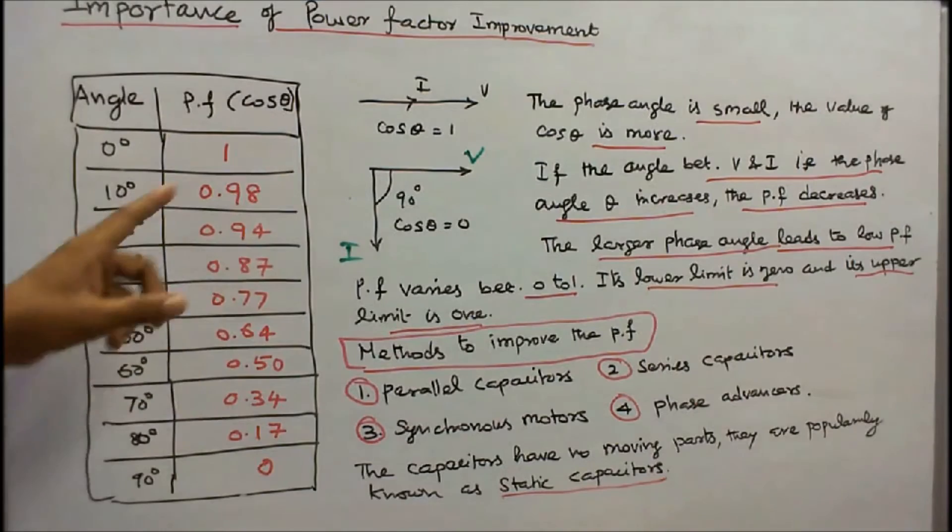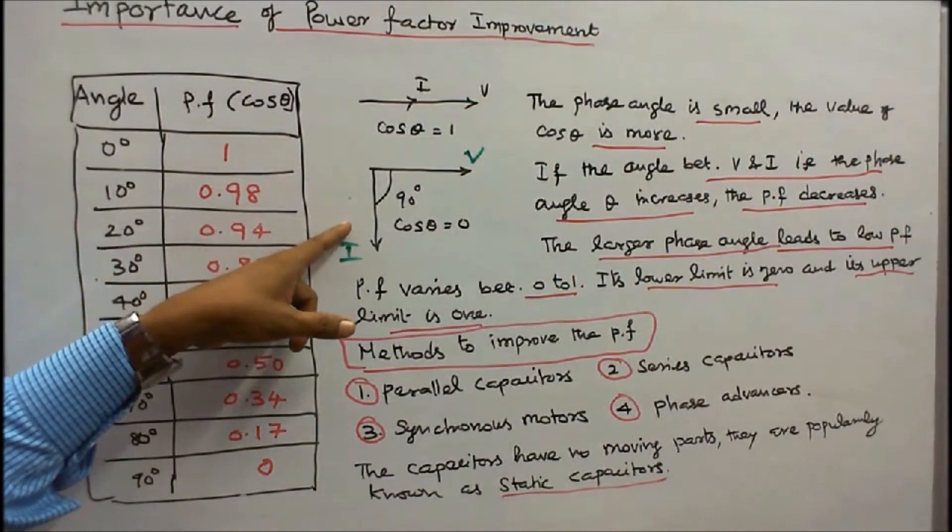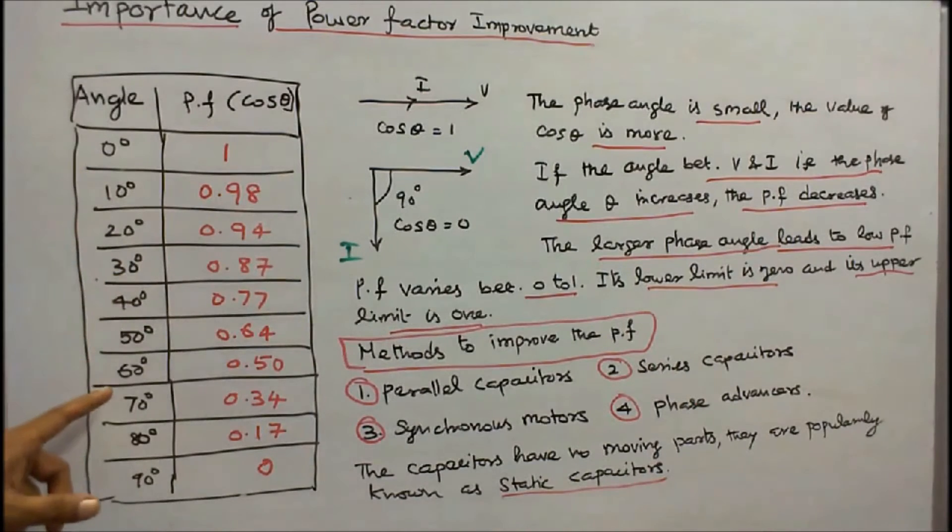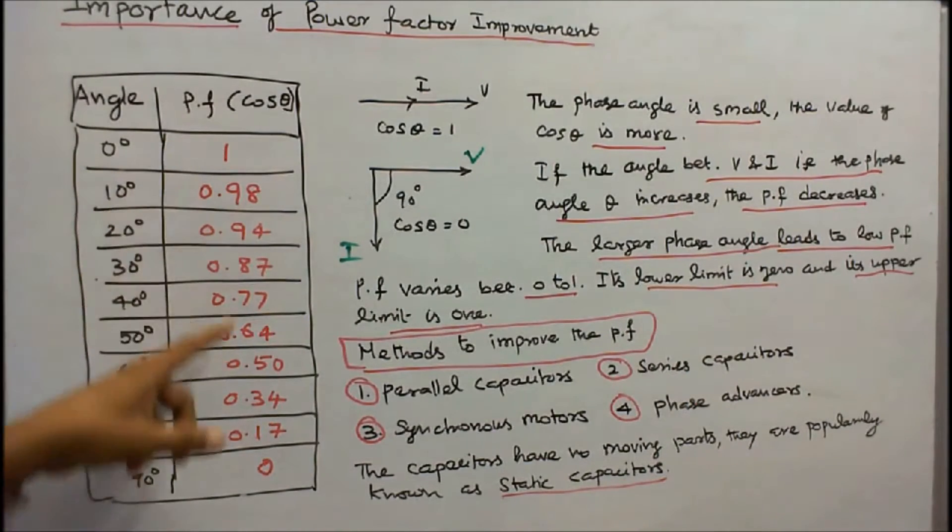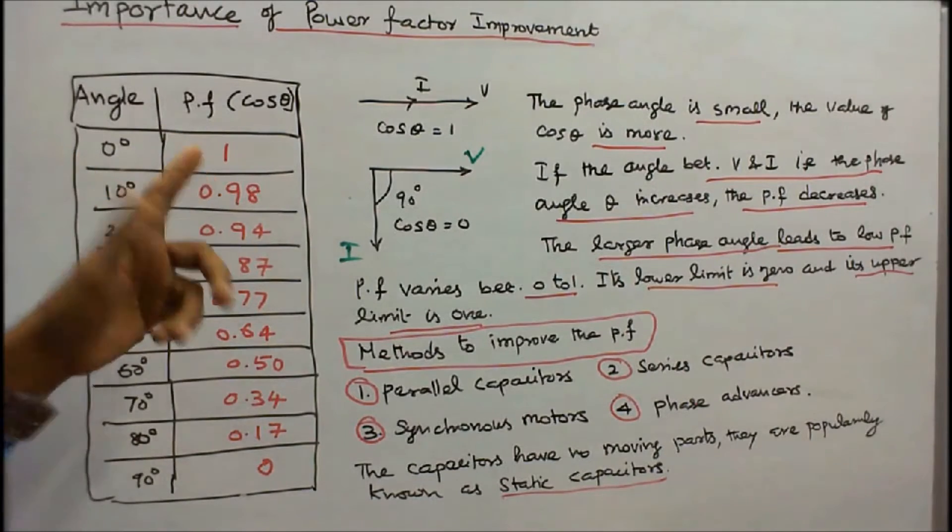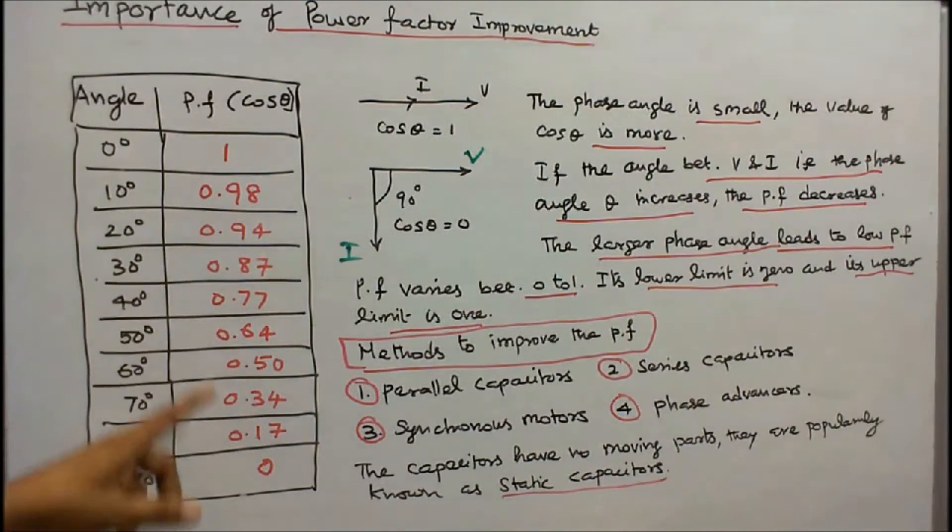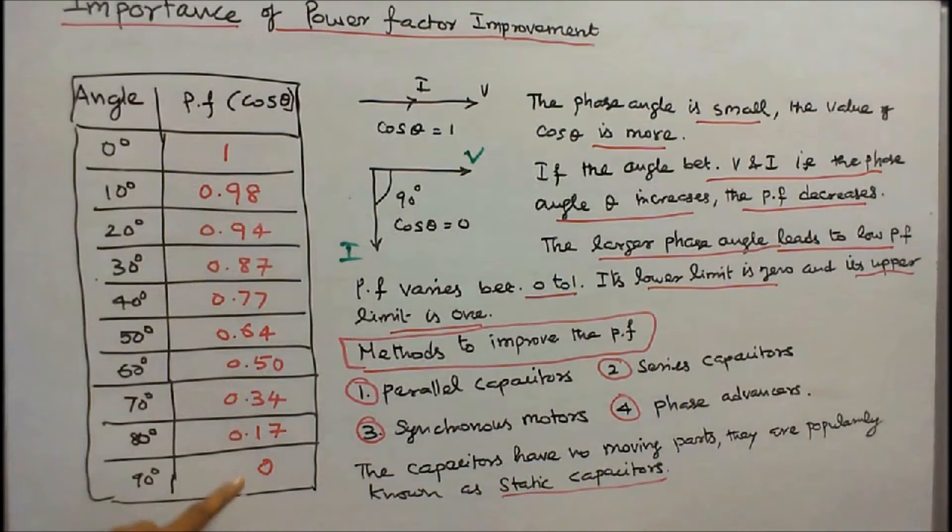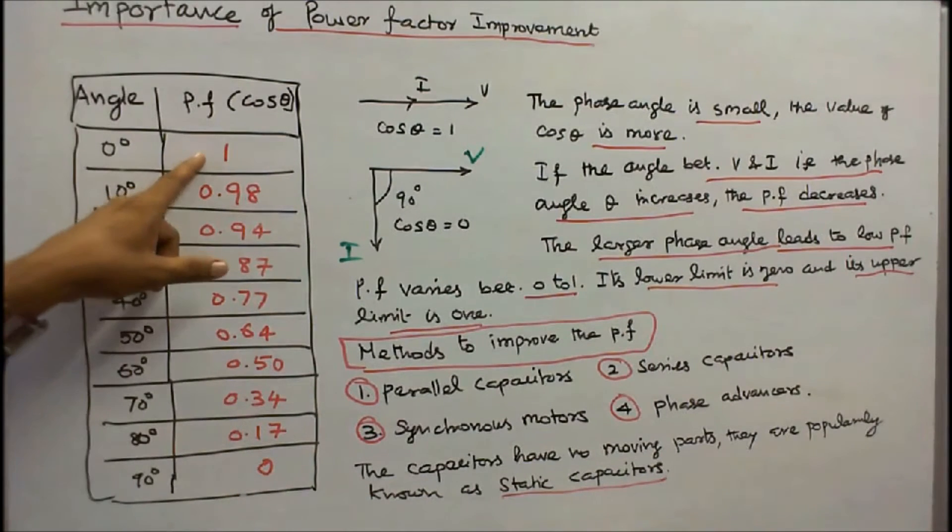When the phase angle is small, the value of cos θ is more. If the angle between voltage and current increases, the phase angle θ increases, and power factor decreases. The larger phase angle leads to lower power factor. Power factor varies between 0 to 1. Its lower limit is 0 and its upper limit is 1.